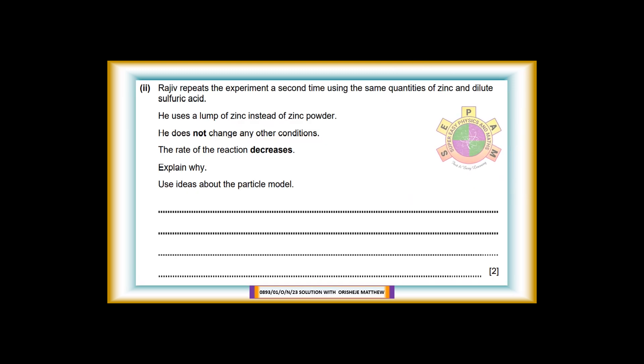11b-2: Rajiv repeats the experiment a second time using the same quantities of zinc and dilute sulfuric acid. He uses a lump of zinc instead of zinc powder. He does not change any other conditions. The rate of the reaction decreases. Explain why. Use ideas about the particle model. Answer: Zinc lump has smaller surface area. Therefore there are fewer collisions between the particles of zinc and sulfuric acid.